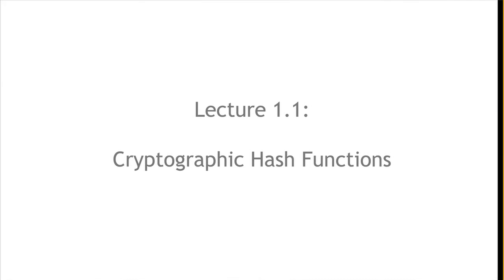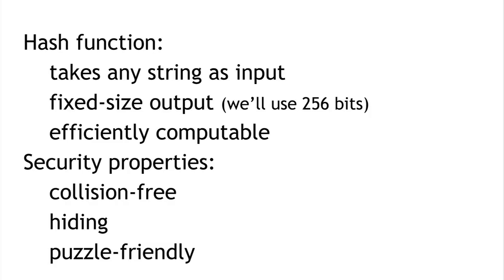In segment 1.1, we're going to talk about cryptographic hash functions — what they are and what their properties are. A cryptographic hash function is a mathematical function with three attributes: it can take any string as input of any size, it produces a fixed-size output (we'll use 256 bits, because that's what Bitcoin does), and it has to be efficiently computable, meaning given a string you can figure out the output in a reasonable length of time.